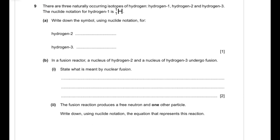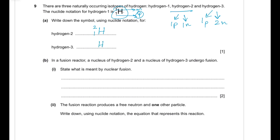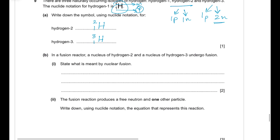Question 9: there are three naturally occurring isotopes of hydrogen. In hydrogen-1 there is 1 proton and 0 neutrons. In hydrogen-2 there is 1 proton and 1 neutron (mass number 2). In hydrogen-3 there is 1 proton and 2 neutrons (mass number 3). The mass number equals the sum of protons and neutrons.